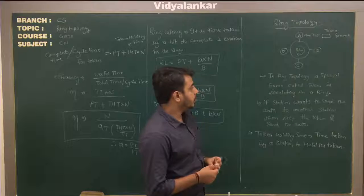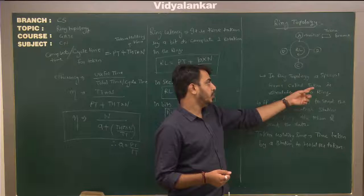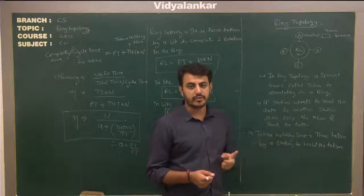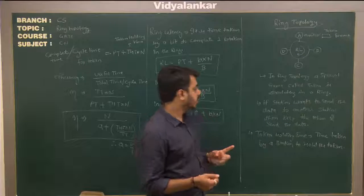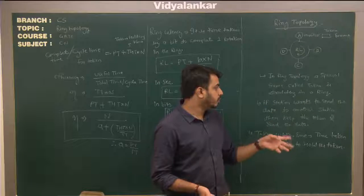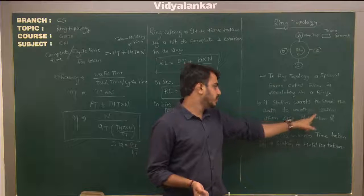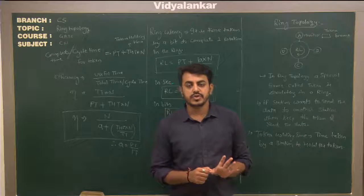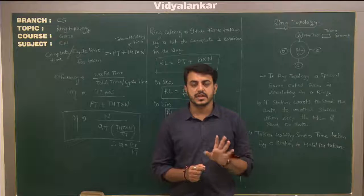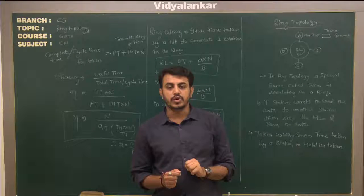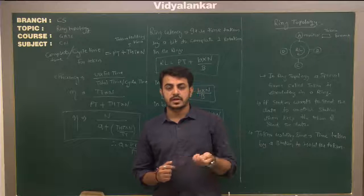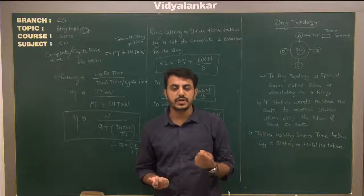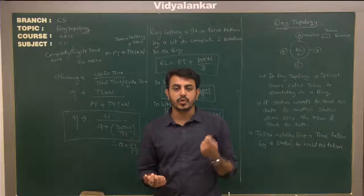In ring topology, a special frame called a token circulates in the ring — we already discussed that. If a station wants to send data to another station, it keeps the token and sends the data. There is never a possibility of collision because only one station has to transmit data whenever a token is received.